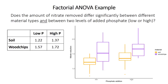For example, does the amount of nitrate removed differ significantly between groups based on both material type and two different levels of added phosphate? So you have soil at high phosphate, soil at low phosphate, wood chips at low phosphate and high phosphate. Each has its own group mean, and we want to know if those group means differ significantly from each other.